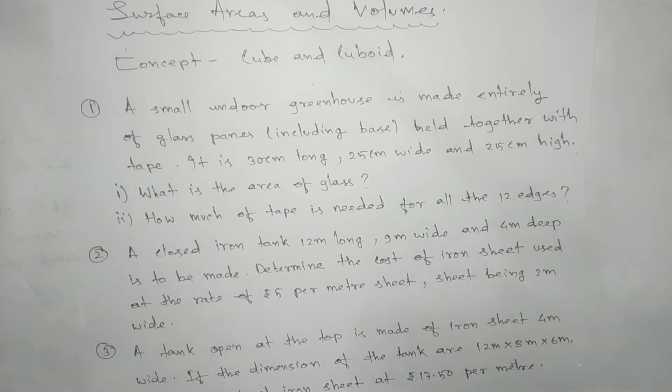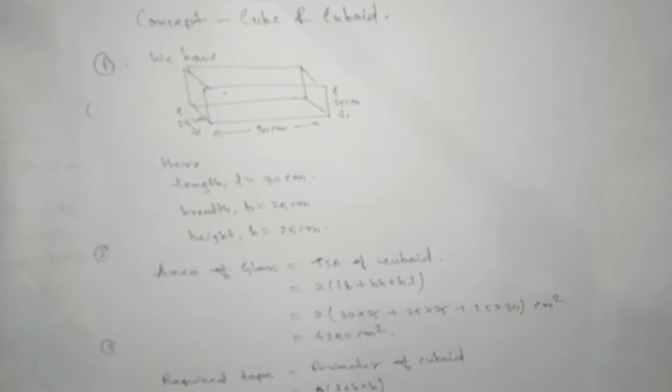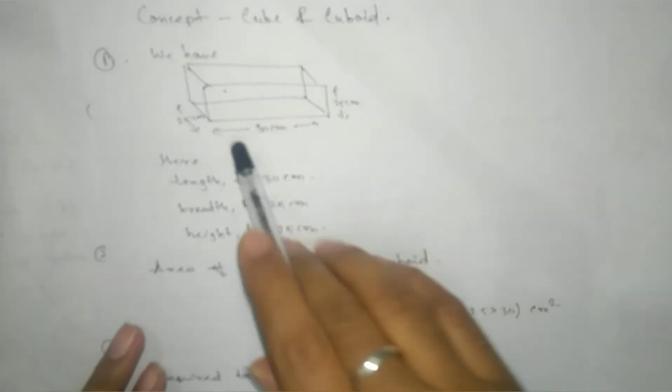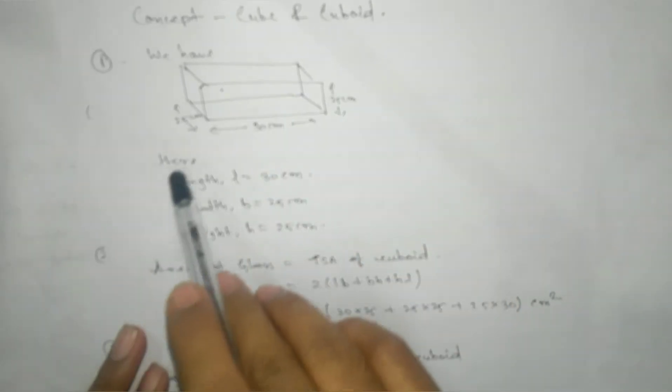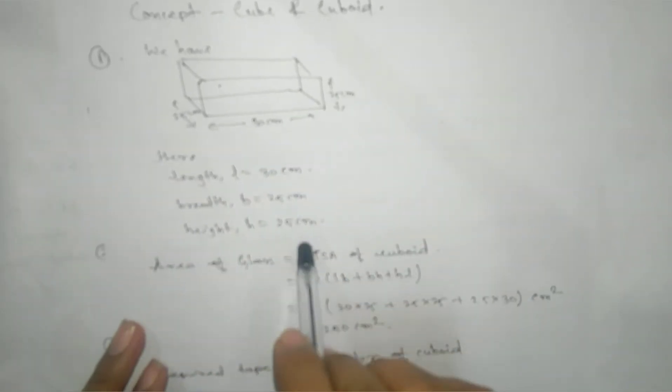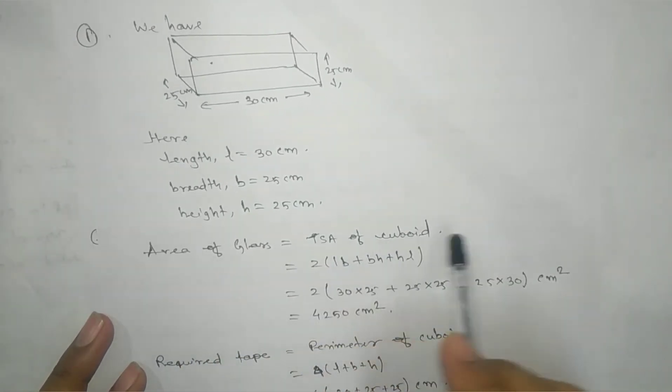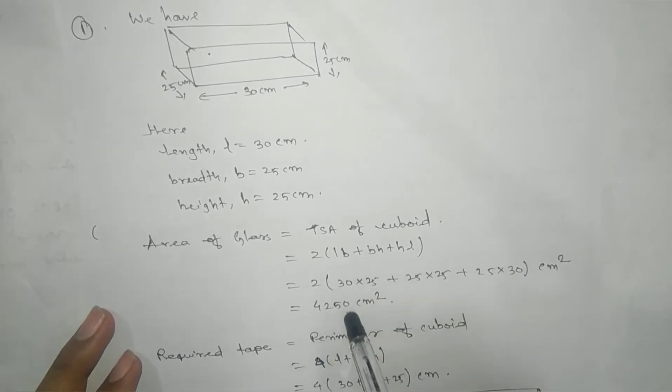Here we have the first one. You can see the presentation. So here we have the greenhouse - length, breadth and height dimensions have been given. That means area of glass equals to TSA of cuboid.